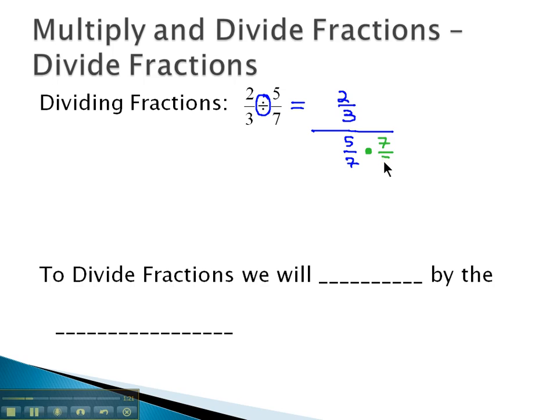So if we multiply by 7 fifths, the reciprocal of 5 sevenths, that'll make the answer 1 in the denominator.